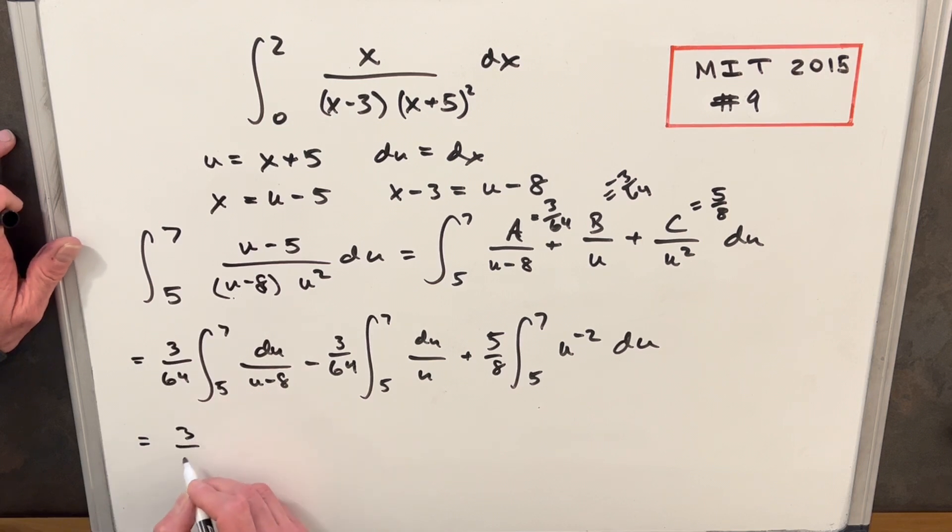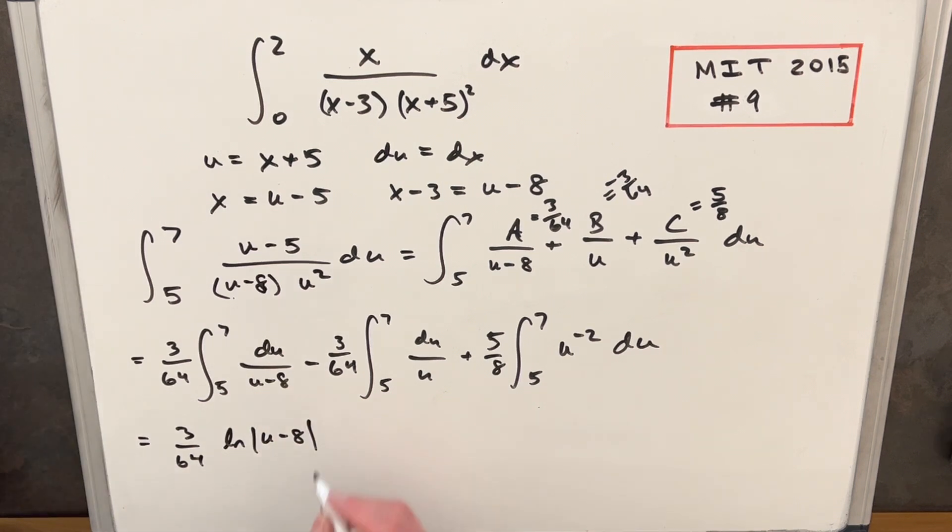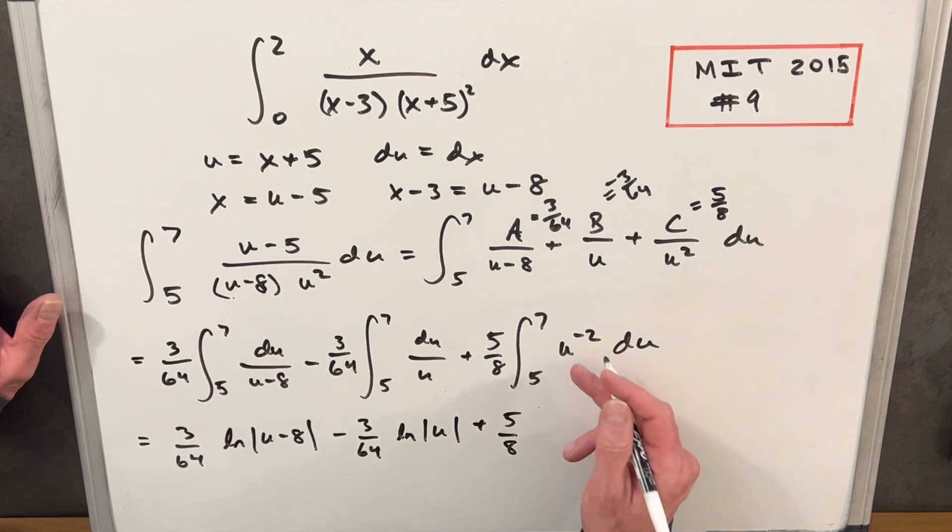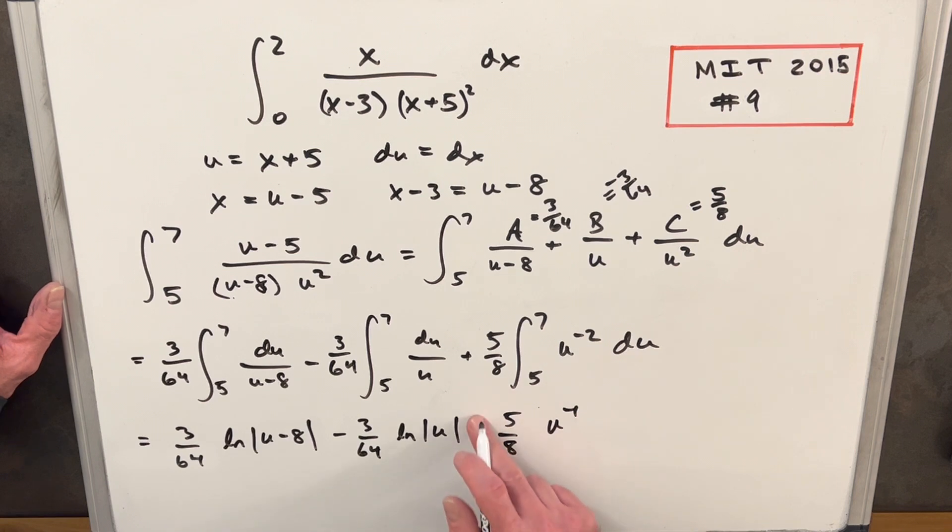For the first one, we're going to have three over 64 natural log u minus eight minus three over 64 natural log absolute value u. And then plus five over eight u to the minus two integrated. That's going to be u to the minus one. But then we're going to have a minus here. So I'm just going to replace, put a minus right there.